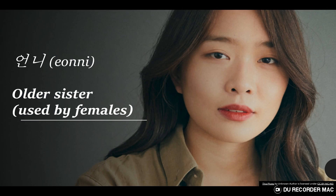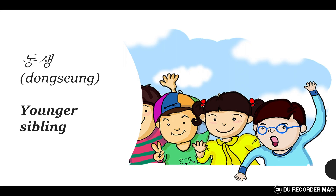언니 — older sister, used by females. 동생 — younger sibling.